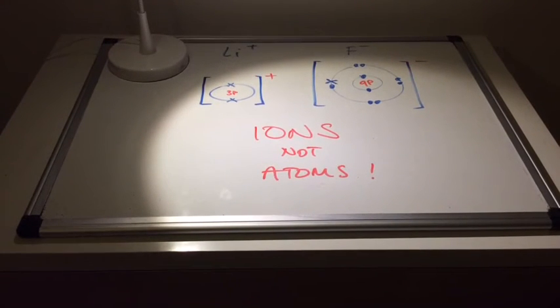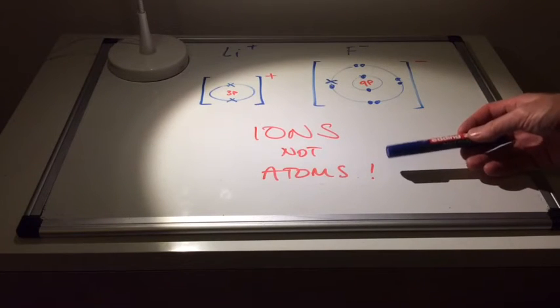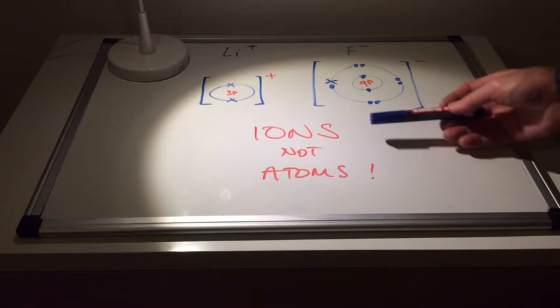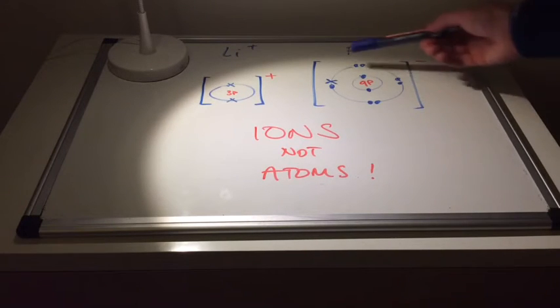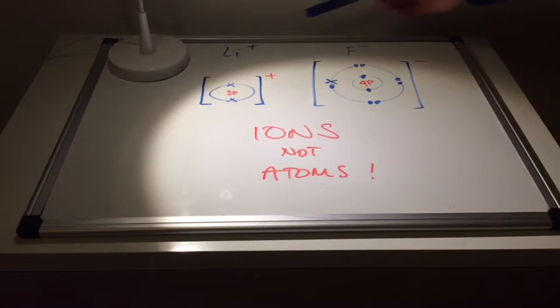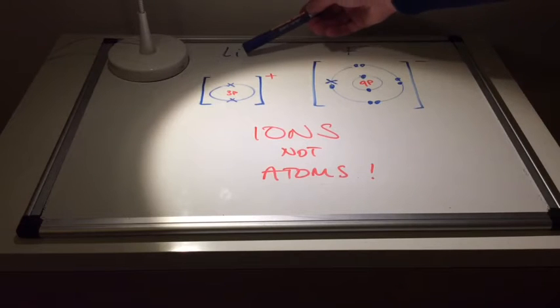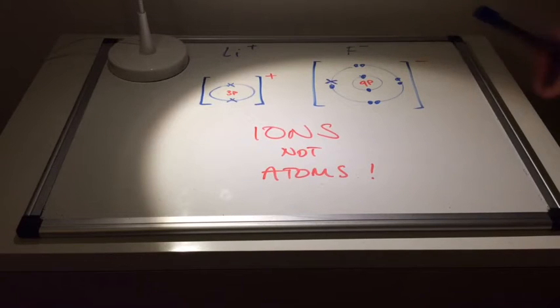So these charged particles are what we call ions, and not atoms. Remember, atoms are neutral. So these charged particles are what we call ions. And I've also changed the formula at the top. So this is the lithium ion, and this is the fluoride, not fluorine, fluoride ion.